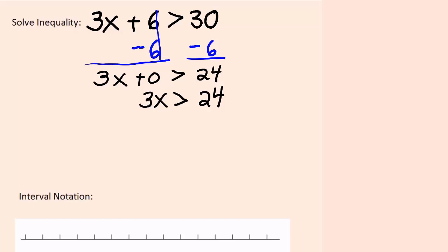3x is greater than 24. Divide both sides by 3 in order to get 1x. That gives us 1x is greater than 24 divided by 3, which is 8.